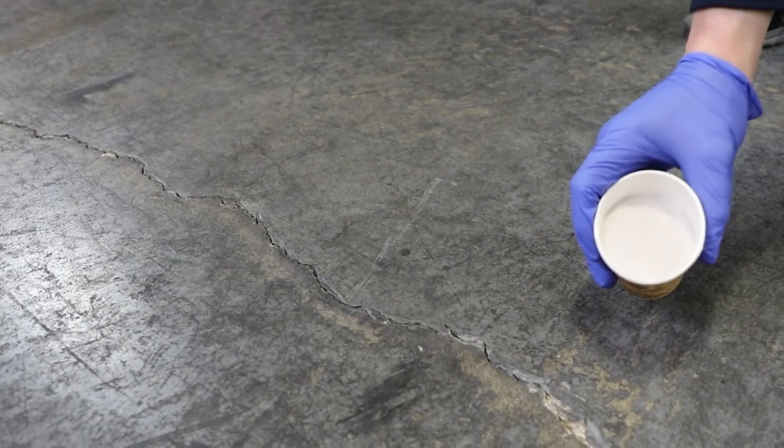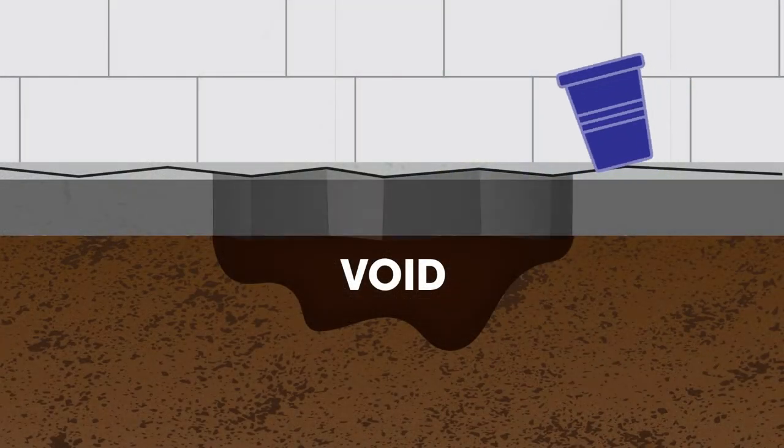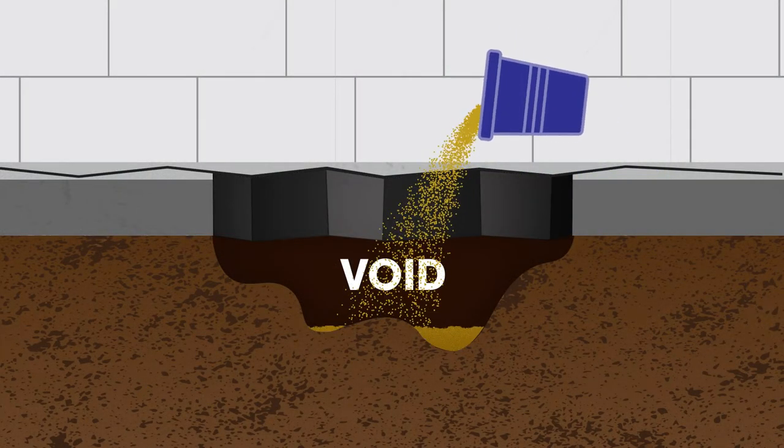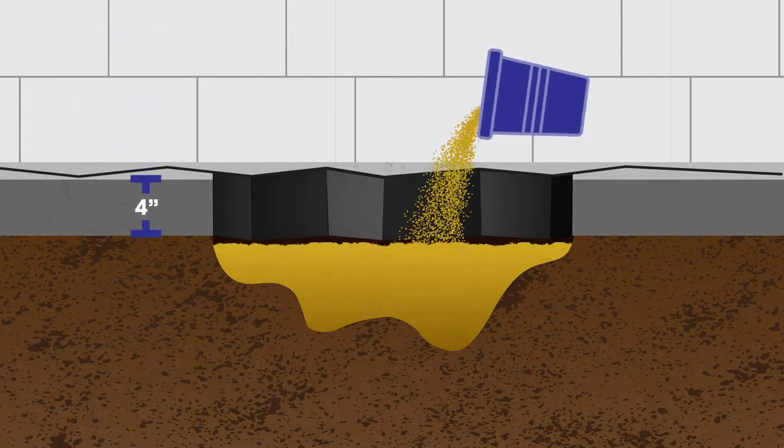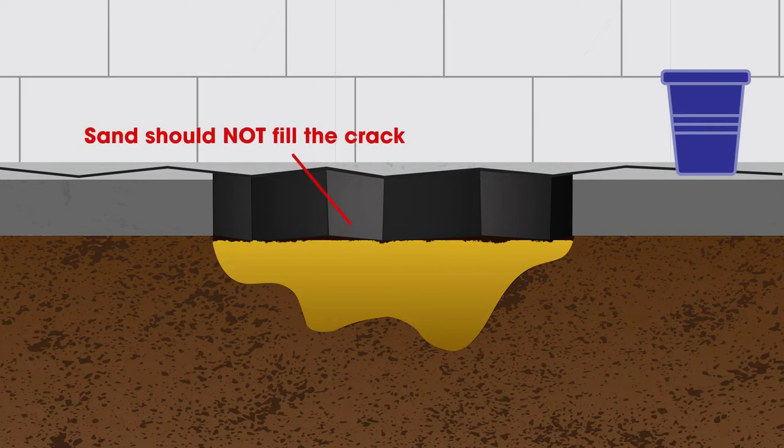If cracks are large, mound sand parallel to crack for ease of use. On wider cracks, first add sand to fill any voids under the slab. Standard slabs are 4 inches deep. If possible, measure the level of the sand. Sand should not fill the entire crack. Leave 4 inches from top of slab.